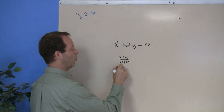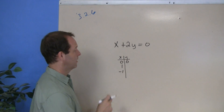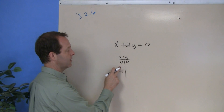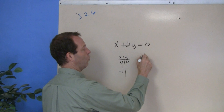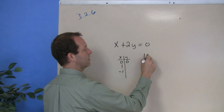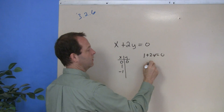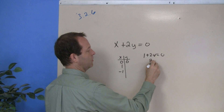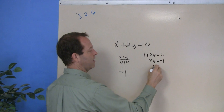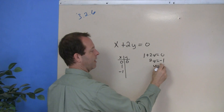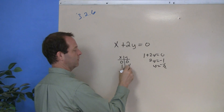Let's try x equals 1 and see what happens. If x were 1, I would have 1 plus 2y equals 0, so 2y equals negative 1, and y equals negative one half. So there's one point.